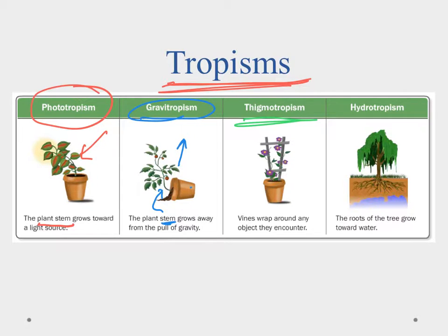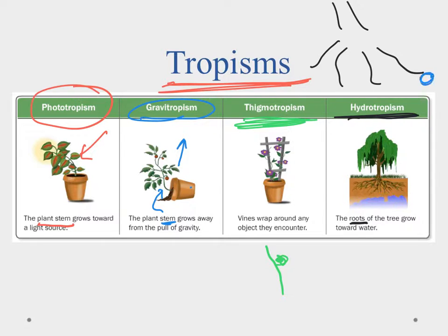Next we have thigmatropism — that's a response to touch — seen primarily in vines, where the plant grows out with a little curly tendril that wraps around whatever it touches. There are also plants that react to touch more dramatically, like a Venus flytrap: when a fly lands inside and triggers a little hair, it closes up its leaves and secretes digestive enzymes to get nutrients. Finally, there's hydrotropism, which primarily affects the roots — the roots grow toward water. If a tree sends roots out everywhere and finds water in a certain direction, it will send more roots that way to get enough water to live.